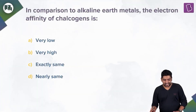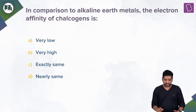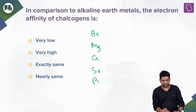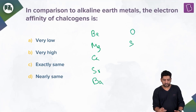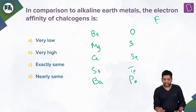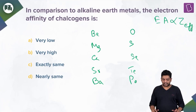Next question: comparing the electron affinity of alkaline earth metals (Group 2: Be, Mg, Ca, Sr, Ba) to chalcogens (Group 16: O, S, Se, Te, Po). In general, electron affinity is directly proportional to Z_effective — greater nuclear attraction leads to greater electron affinity.